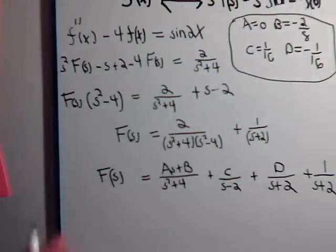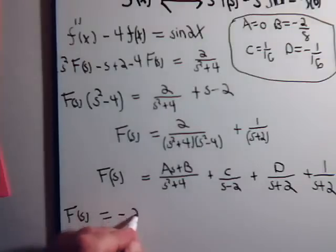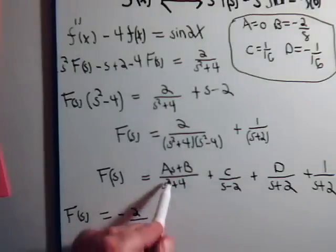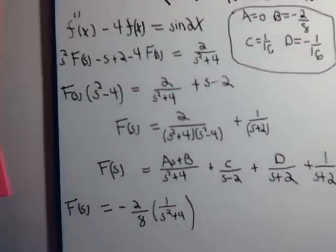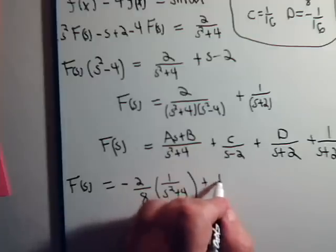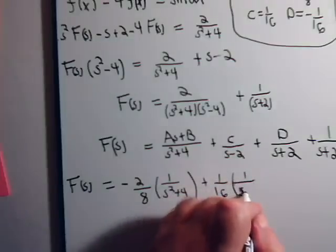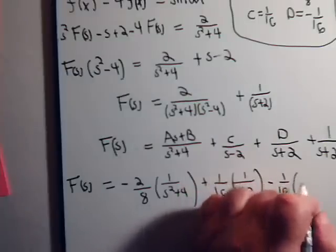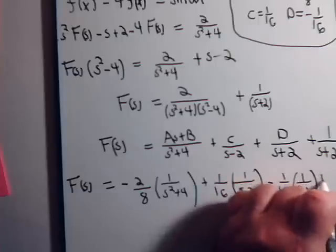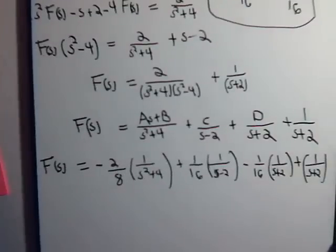And a is 0, b is minus 2/8, so now we get f of s equals minus 2 over 8 times 1 over s squared plus 4. C is 1/16, so we have plus 1 over 16 times 1 over s minus 2. D is minus 1/16, so you have minus 1 over 16, 1 over s plus 2, plus 1 over s plus 2.